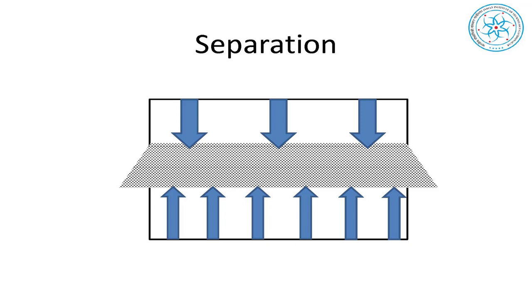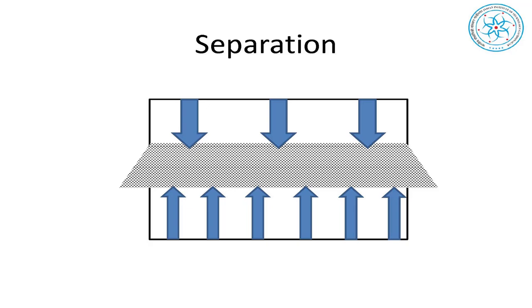Separation is one of the primary functions. In fact, 70 percent of roads in the US actually use geosynthetics for separation and other purposes.